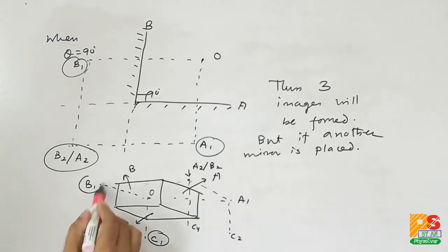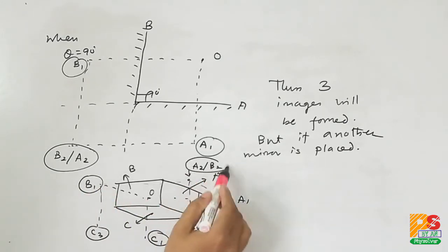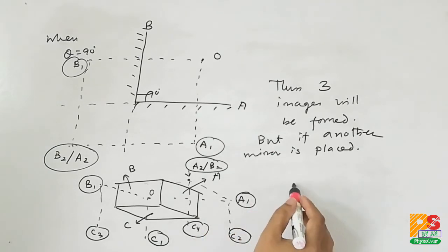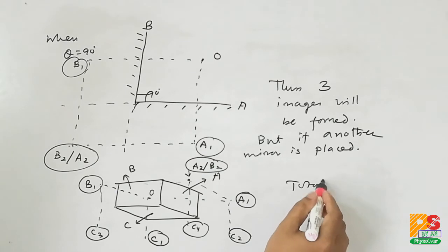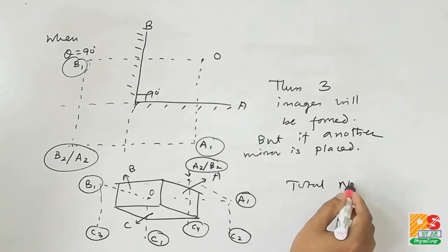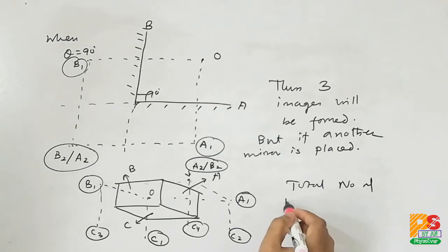Therefore, four images are formed behind mirror C, and three images were already formed. The total number of images is 3 plus 4, which equals 7.